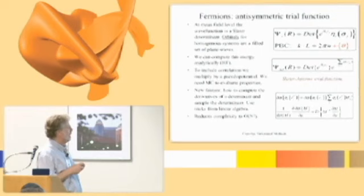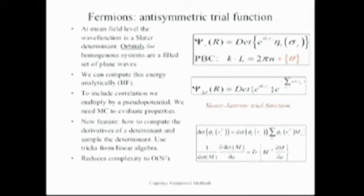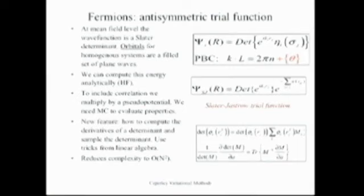Now let's talk about fermion statistics. Assuming you know what a Slater determinant is: if you don't have interactions, the solution to the Schrödinger equation for anti-symmetric particles — fermions — is the Slater determinant. If you have N electrons, it's an N by N matrix — the Slater matrix. The exercise this afternoon is for a homogeneous electron gas. Under periodic boundary conditions, the coefficients are plane waves — does everybody know what periodic boundary conditions are?